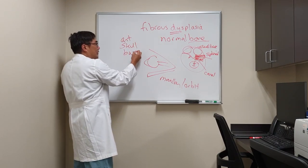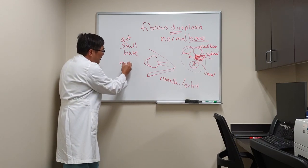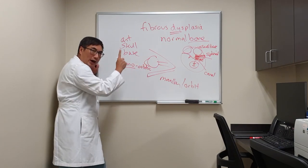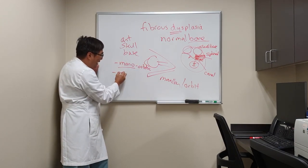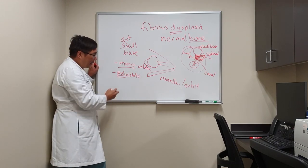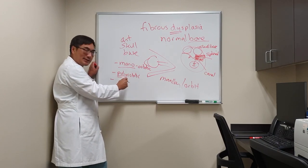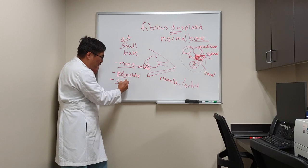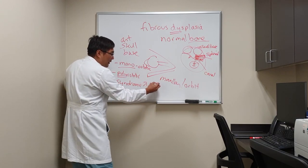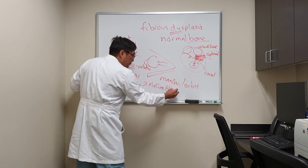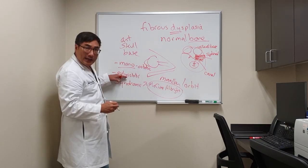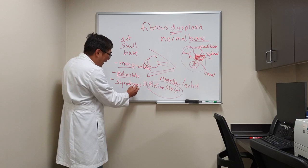There are two forms of fibrous dysplasia seen in neuro: a monostotic form, which means only one bone is involved, and a polyostotic form, which means more than one bone. Sometimes polyostatic disease is part of a syndrome — the syndrome we're worried about is called McCune-Albright syndrome, which is associated with polyostotic fibrous dysplasia and endocrinopathy.